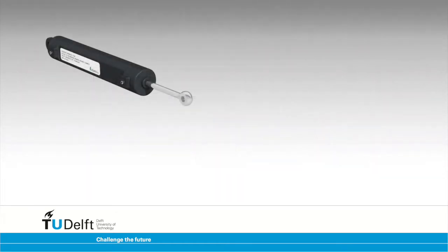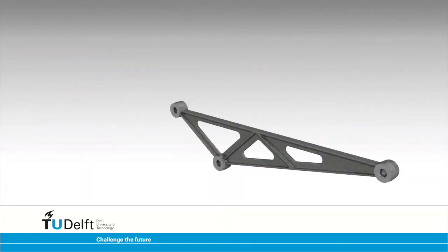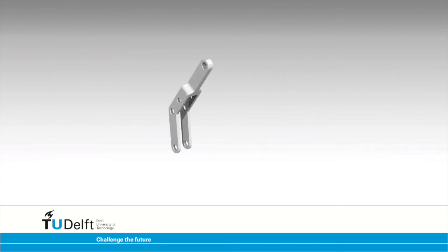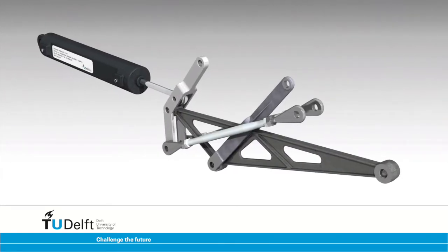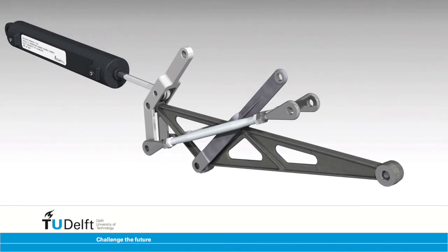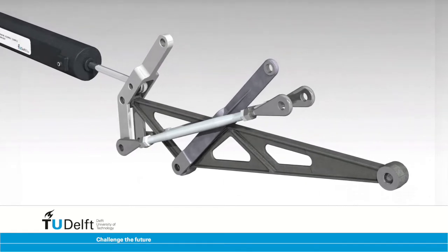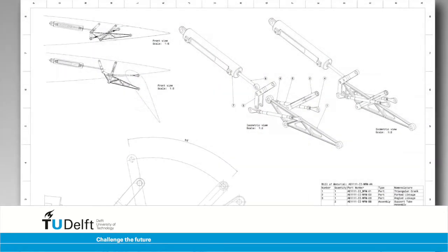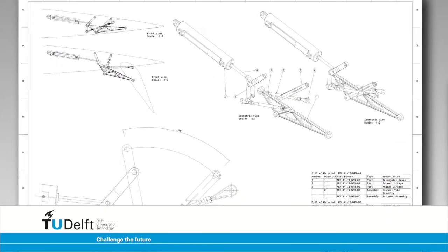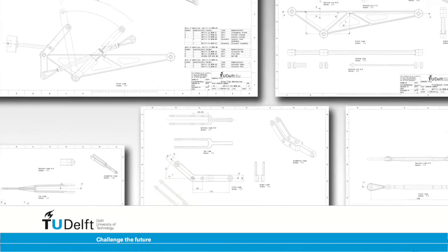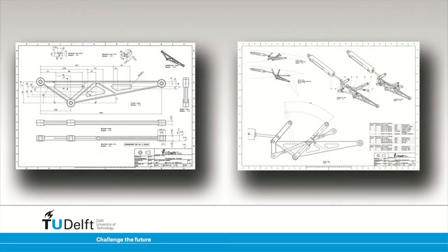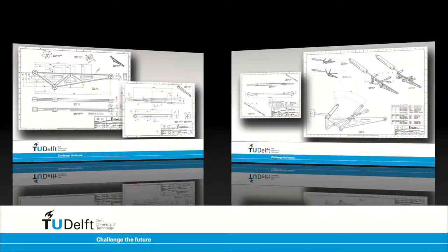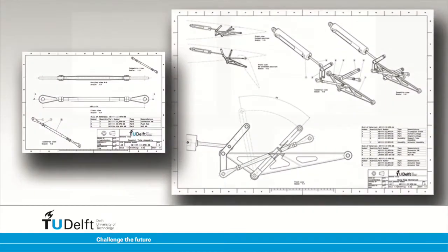Information is required about the individual components and about the way the components interact in the assembled product to be able to manufacture the wing flap mechanism. This information can be distilled from 2D technical engineering drawings. Two main types of technical engineering drawings can be distinguished: detail drawings and assembly drawings.